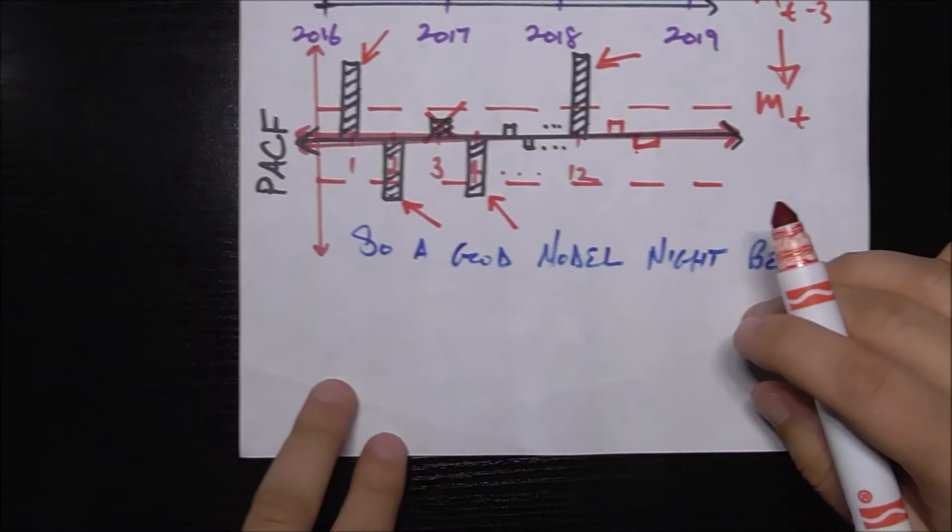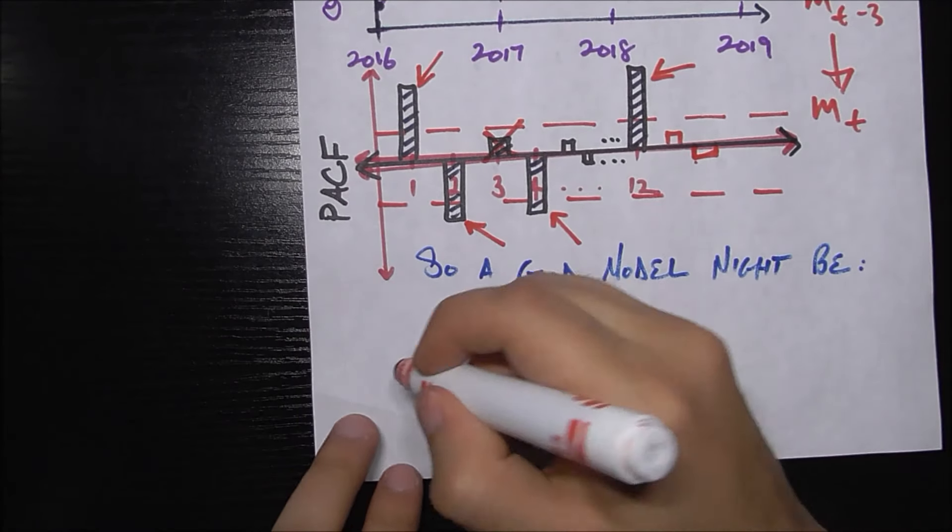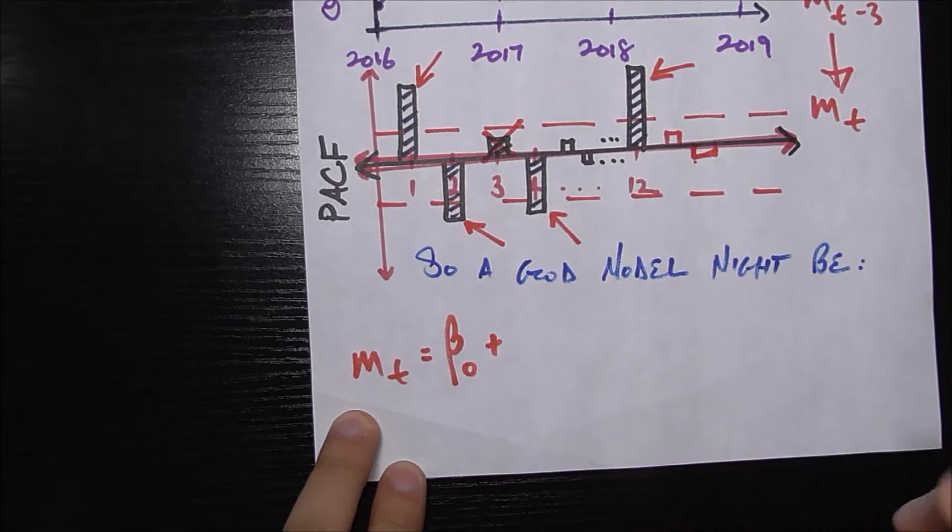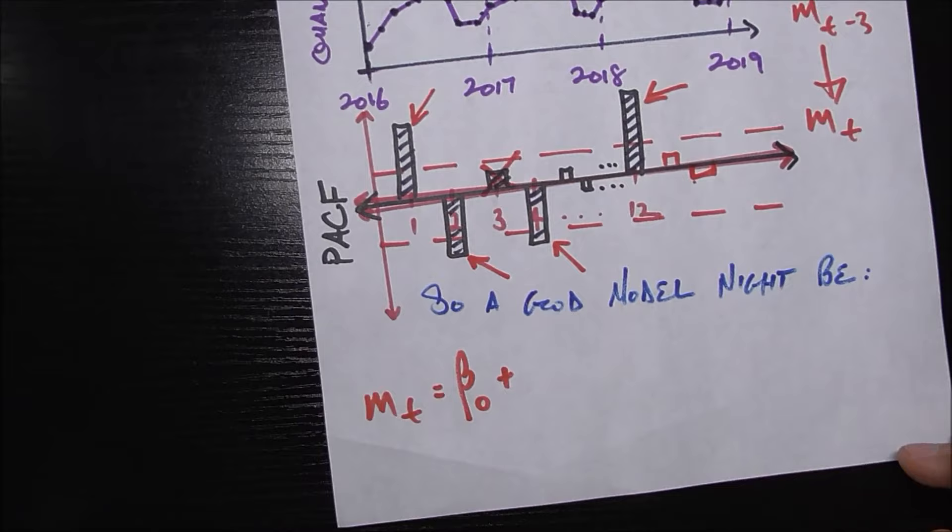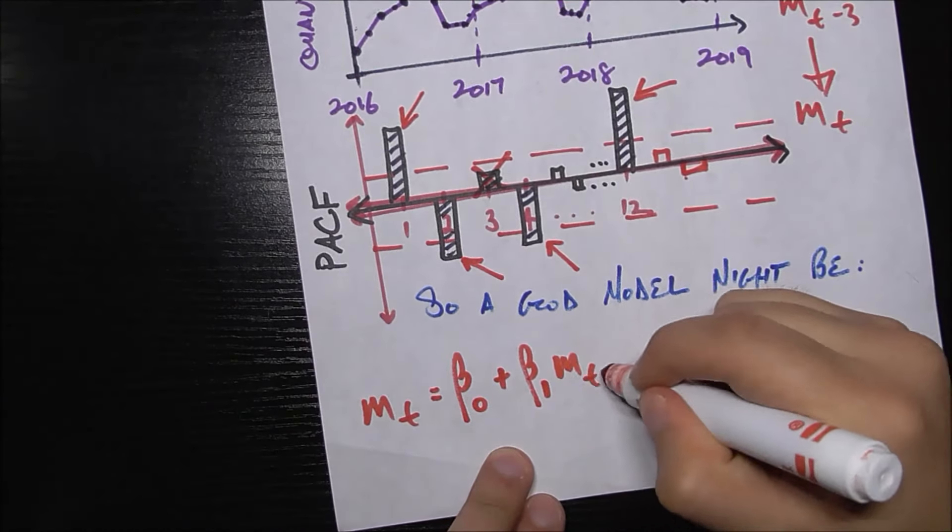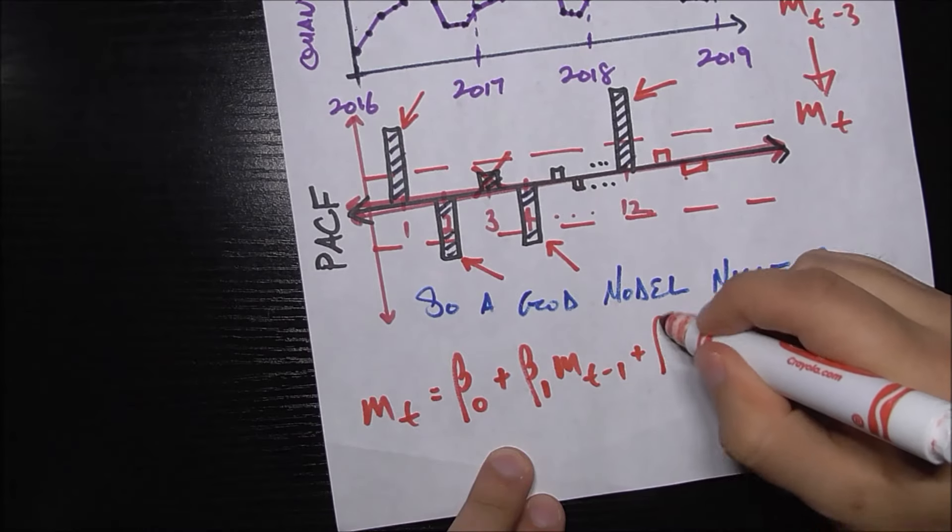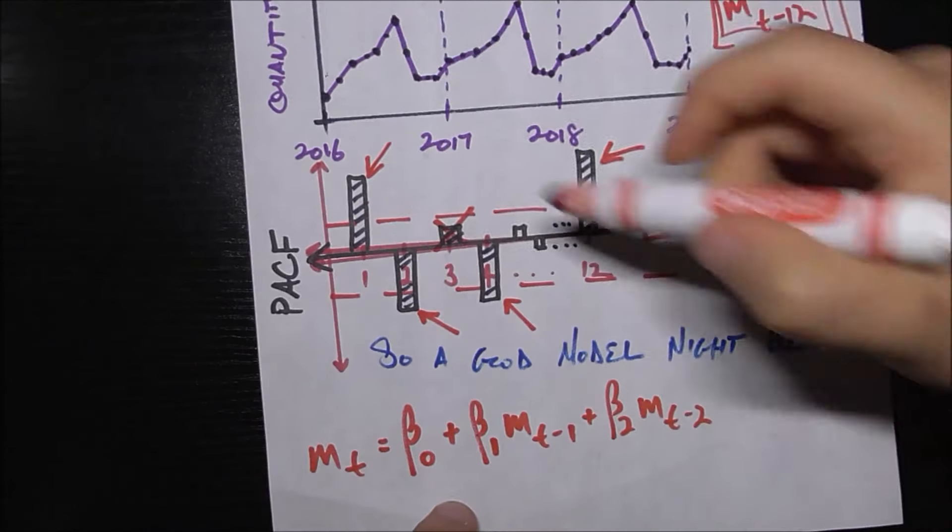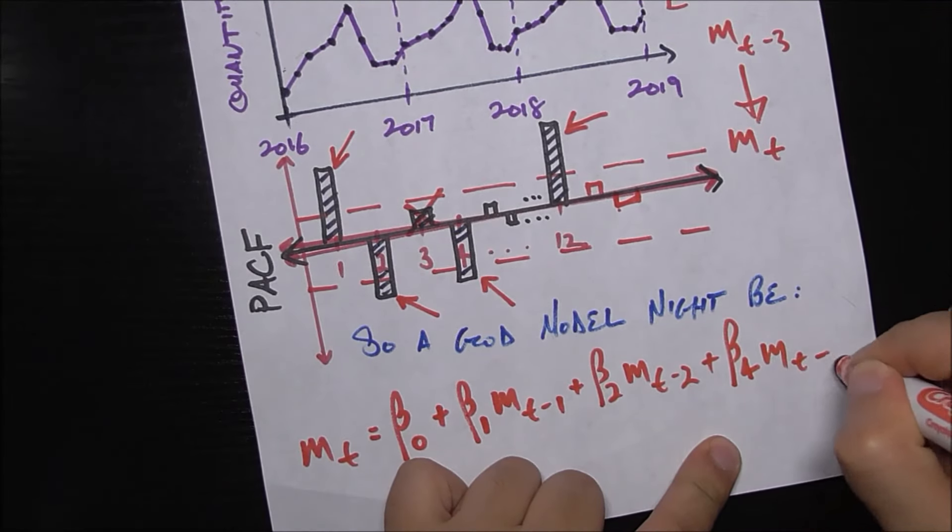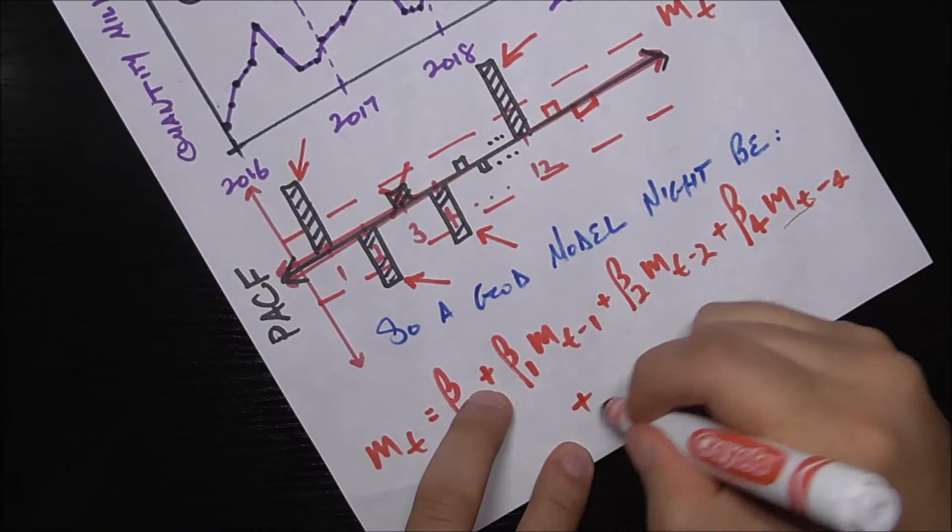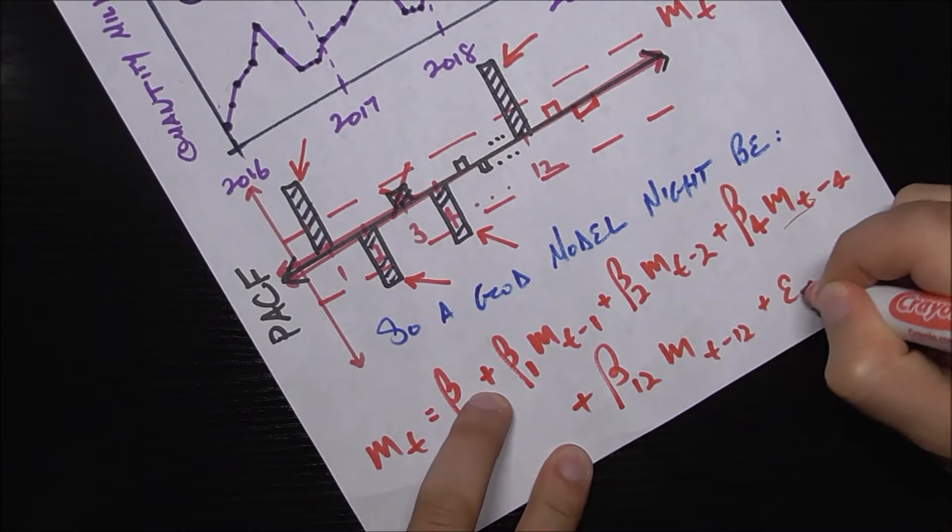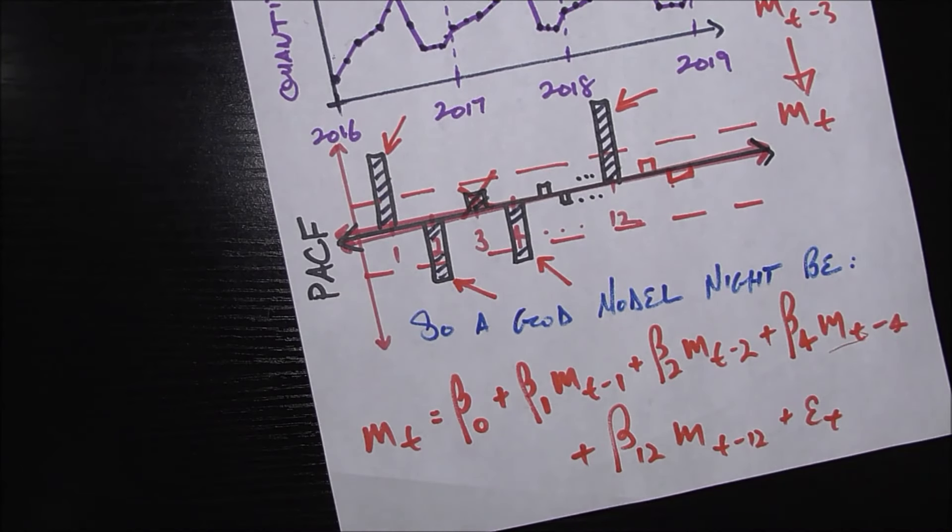So what might a good model look like? A good model might look like: of course we first start out with the thing we're trying to predict which is m sub t. We have a coefficient here beta not, the intercept, and then we have beta one and of course the first lag is m sub t minus 1, plus beta two m sub t minus 2. Then three we didn't cut it so we have four: plus beta four m sub t minus 4. And then we have one more: beta 12 m sub t minus 12, and we need to include the error term.